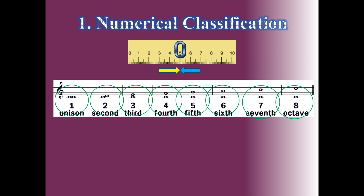You can count — DO, RE, MI, FA, SOL, LA, SI, DO — eight tone names. So we can find the correct answer by counting our fingers from the low note to the high note.